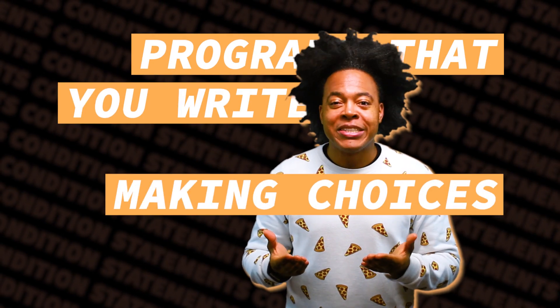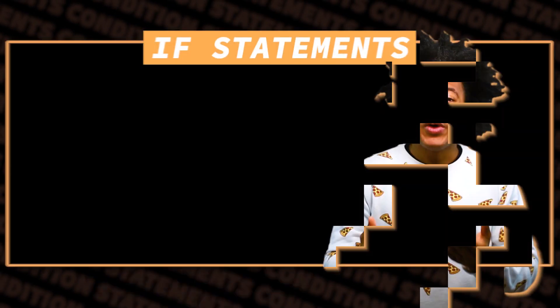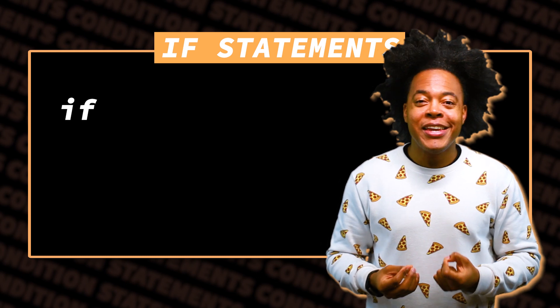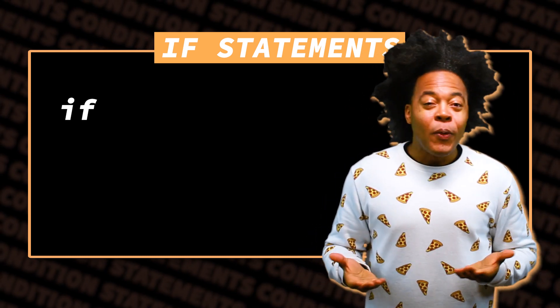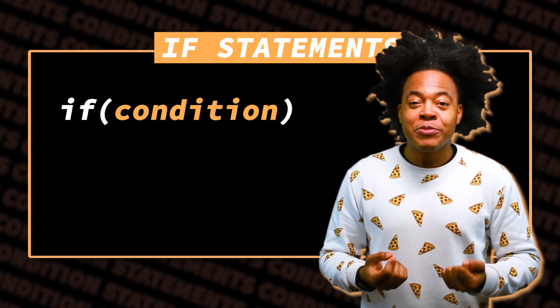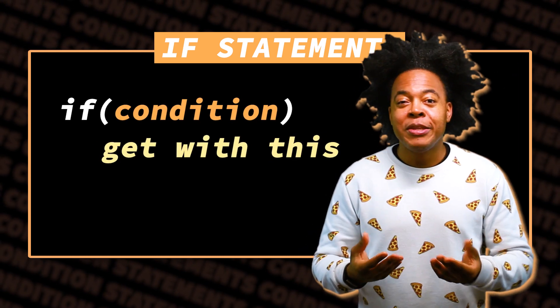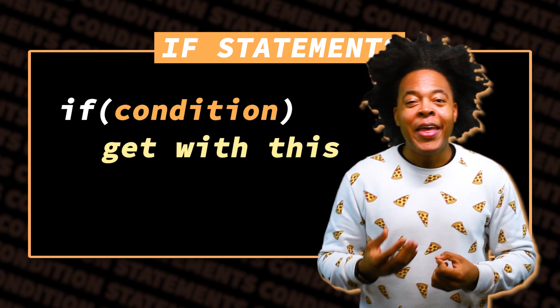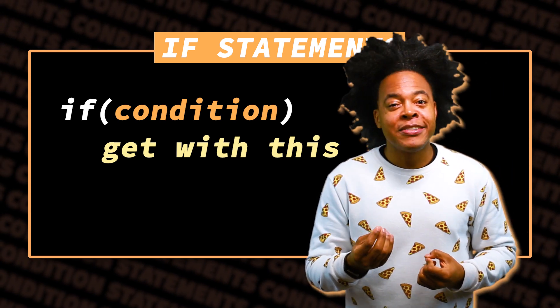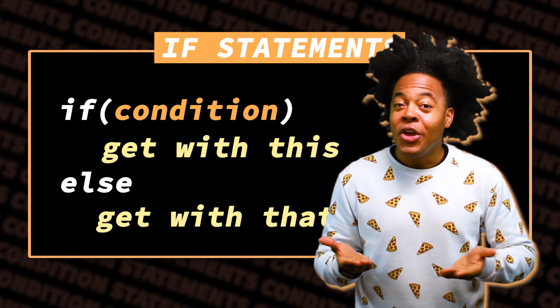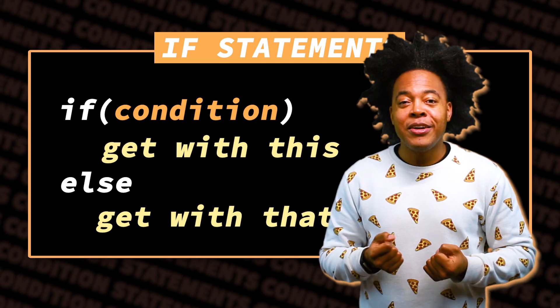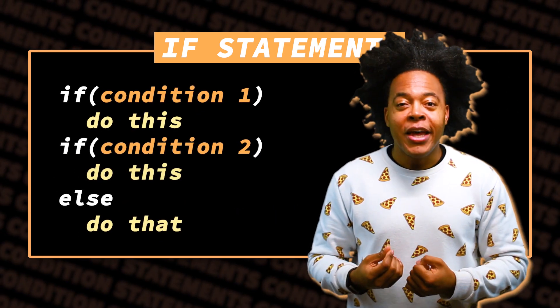Programs that you write make choices by themselves. The if statement — that's a powerful tool. You write an if statement starting with an if, then you specify what the condition is, followed by some code saying what the mission is. In some instances, the if is followed by an else — if the if doesn't happen, you do something else.